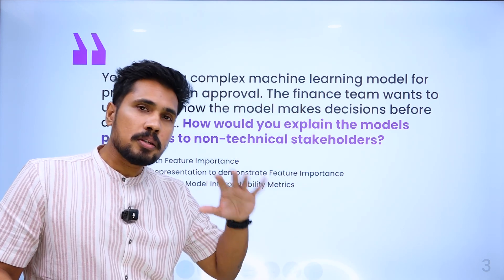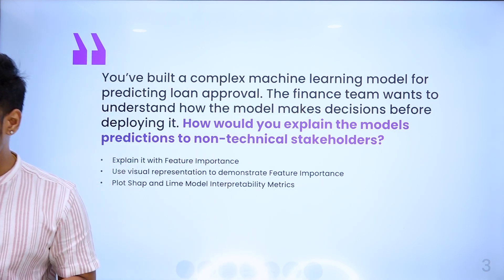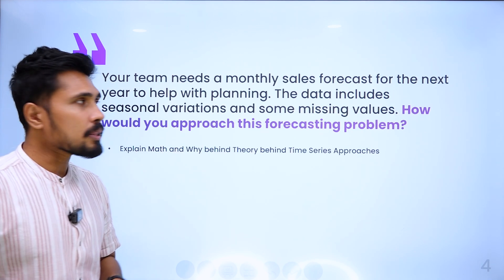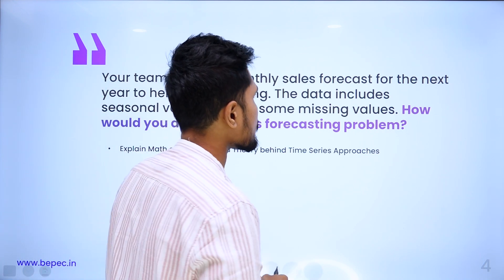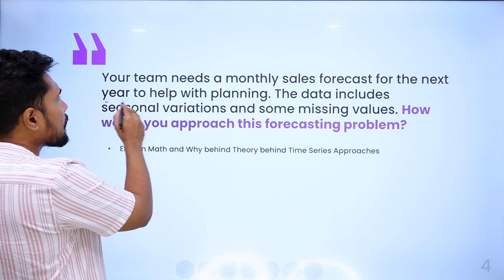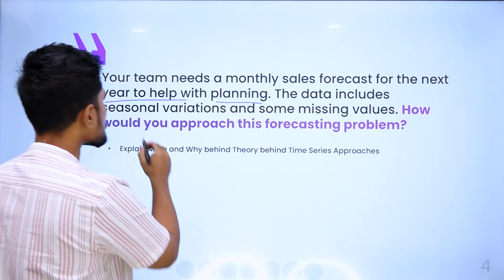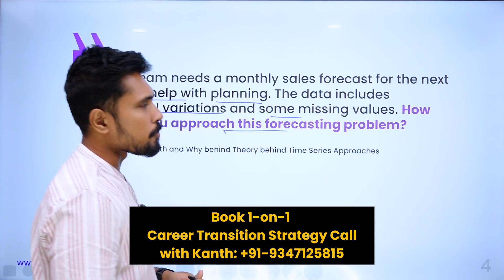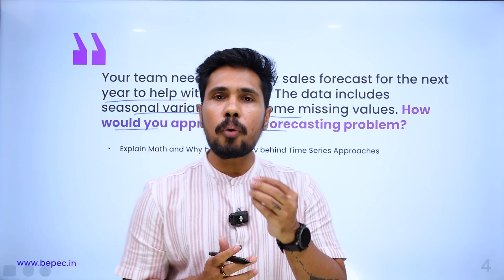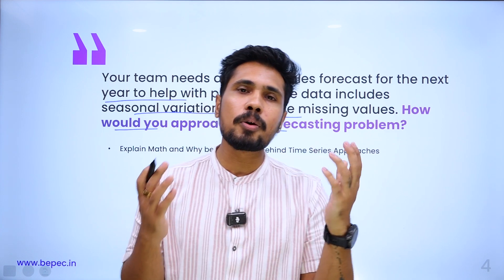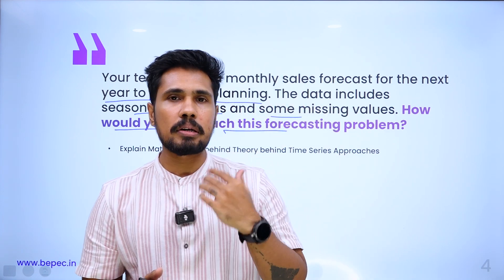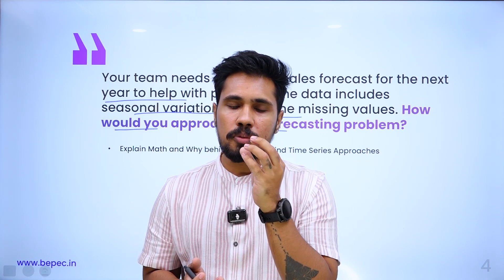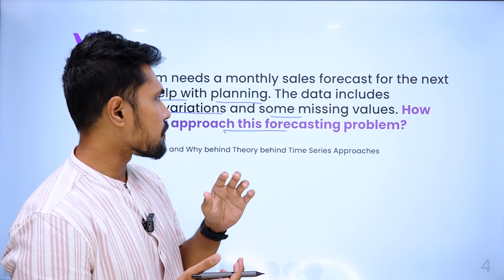That is the second question — a very popular one that recruiters ask. The third scenario: your team needs a monthly sales forecast for the next year to help with planning. The data includes seasonal variants and some missing values. How would you approach this forecasting problem? When you have missing values, how are you trying to fill them? We know you can fill them with mean, median, or mode.